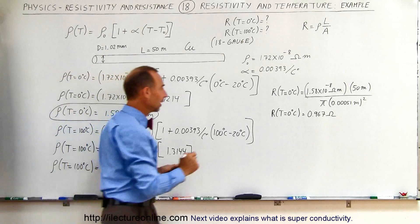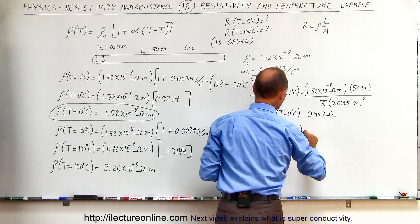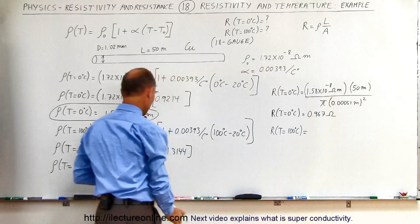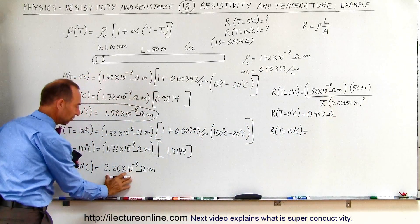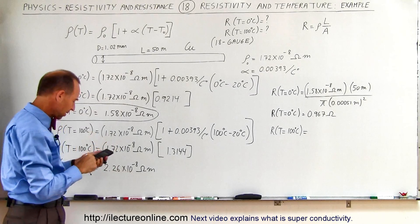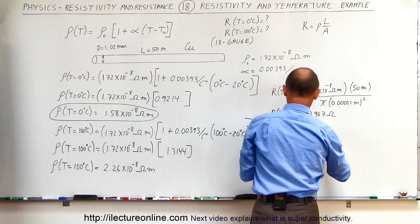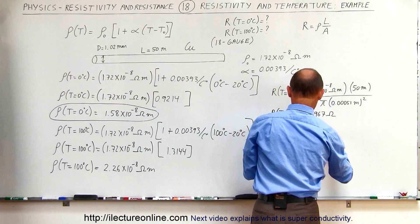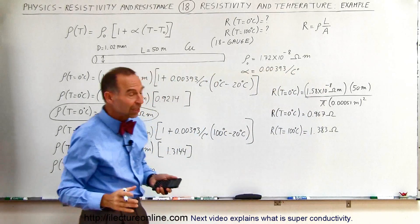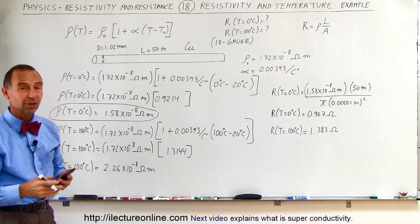What about at 100 degrees centigrade? The only thing that changes is the resistivity. Taking the 0°C resistance, dividing by 1.58 and multiplying by the new resistivity of 2.26, we get a resistance of 1.383 ohms. Notice that there is a significant difference in the resistance of the wiring when the temperature goes to 0 versus 100 degrees centigrade.